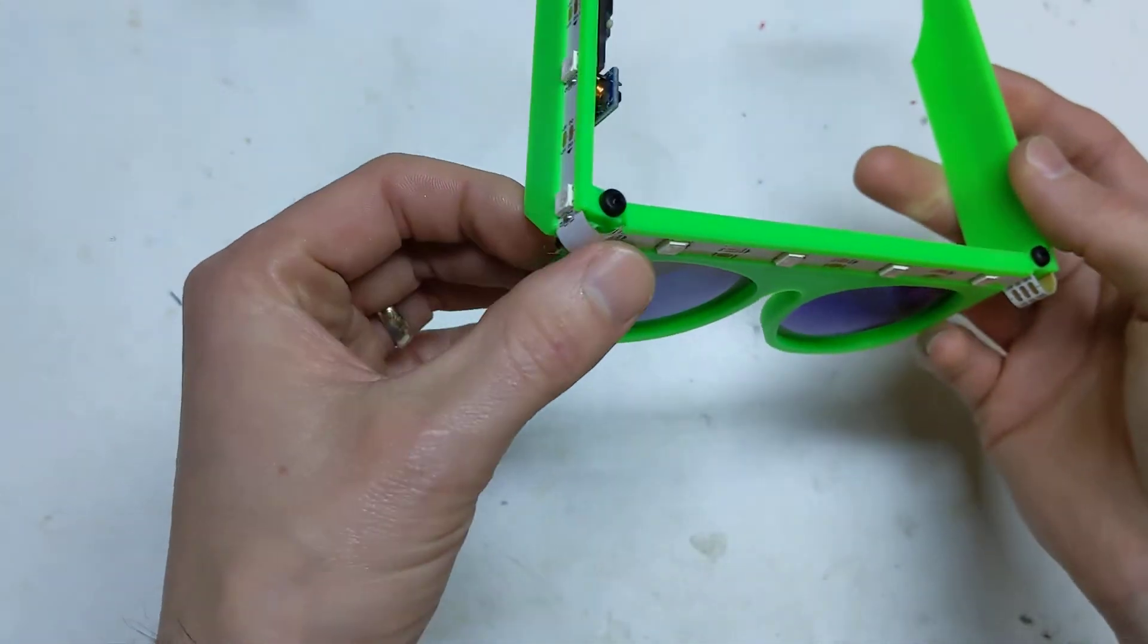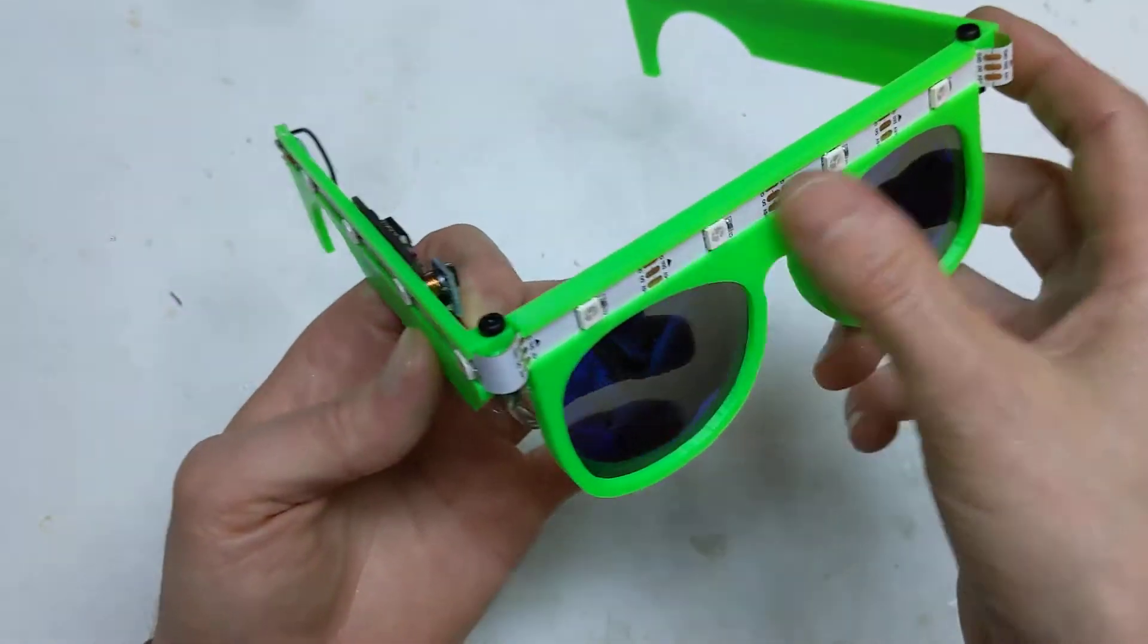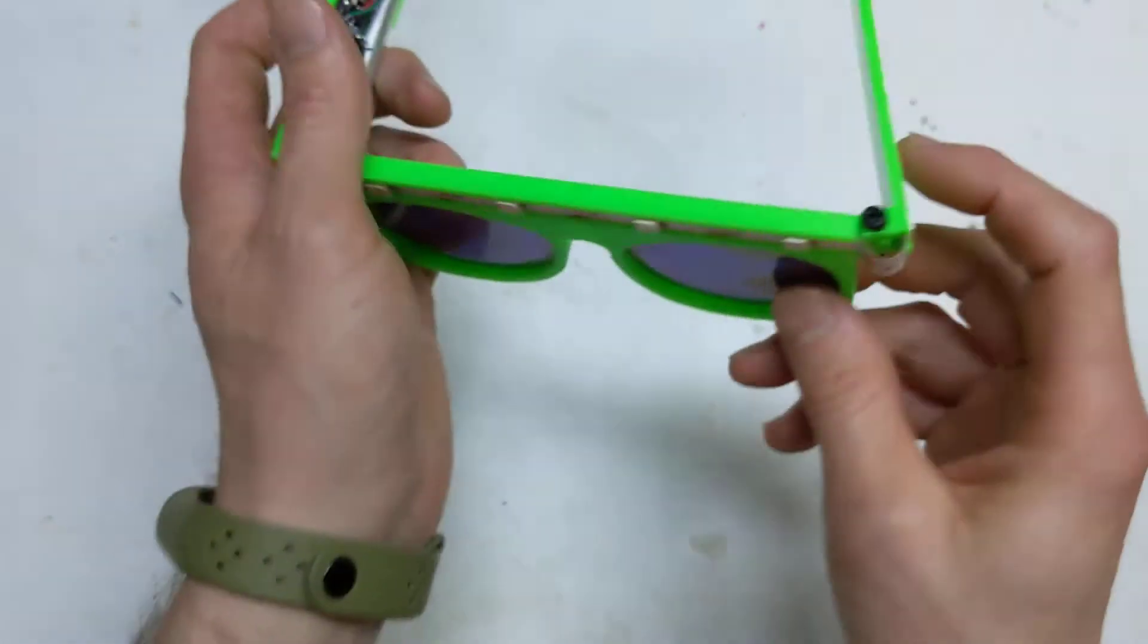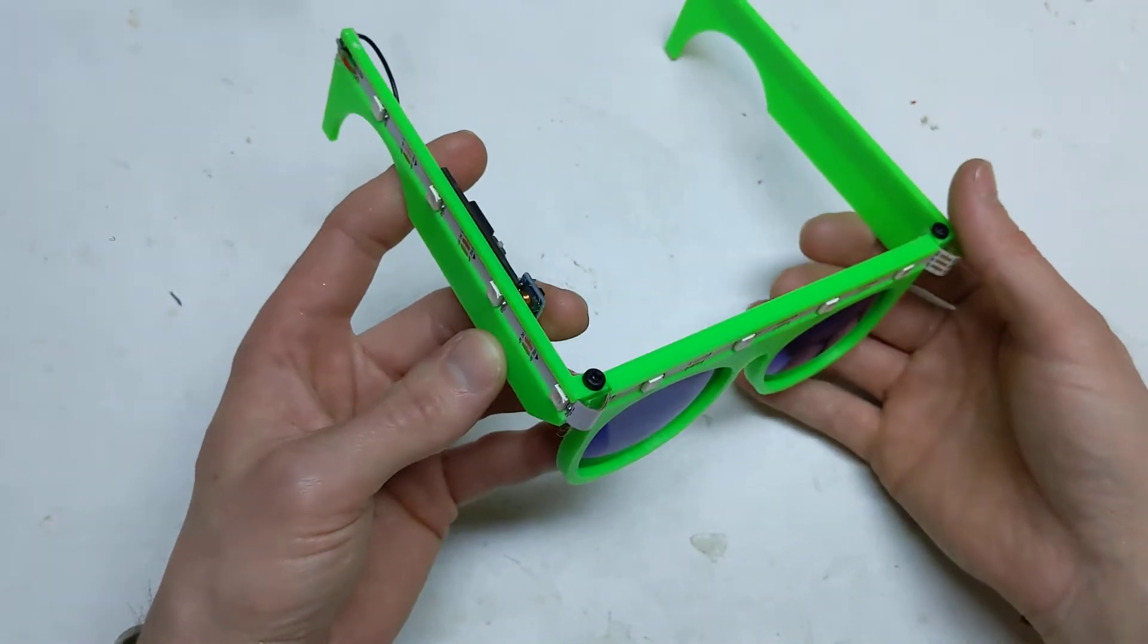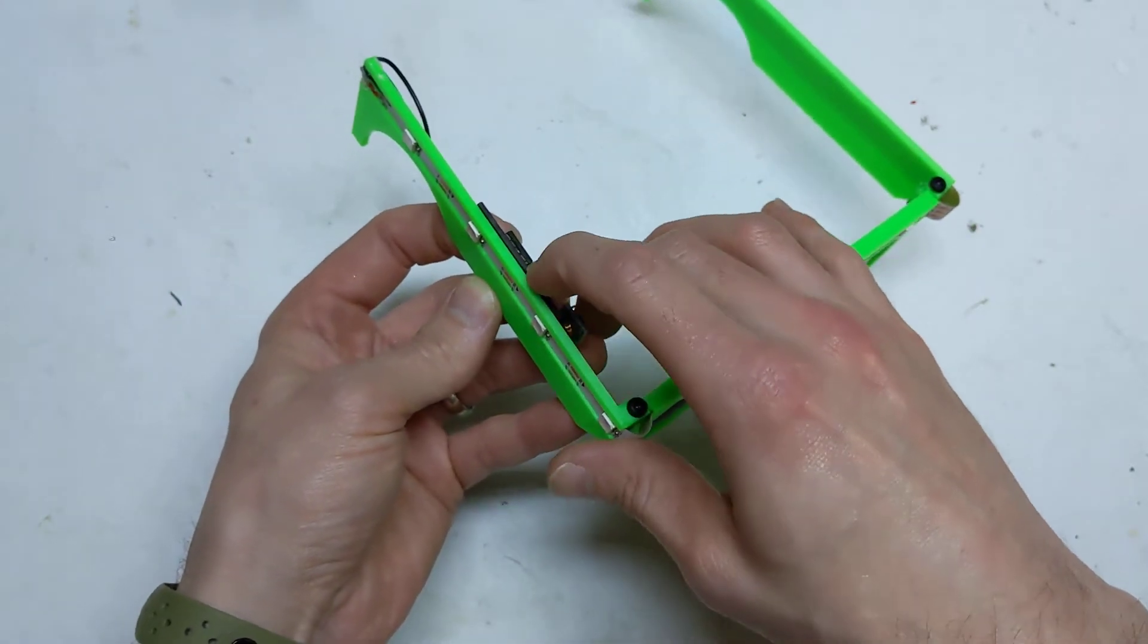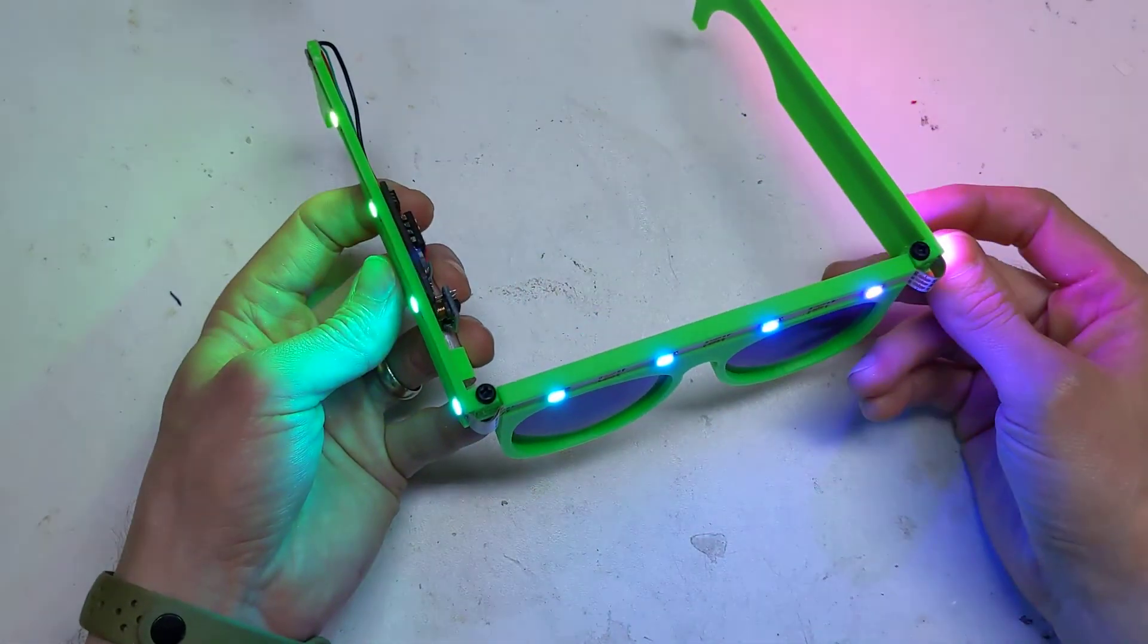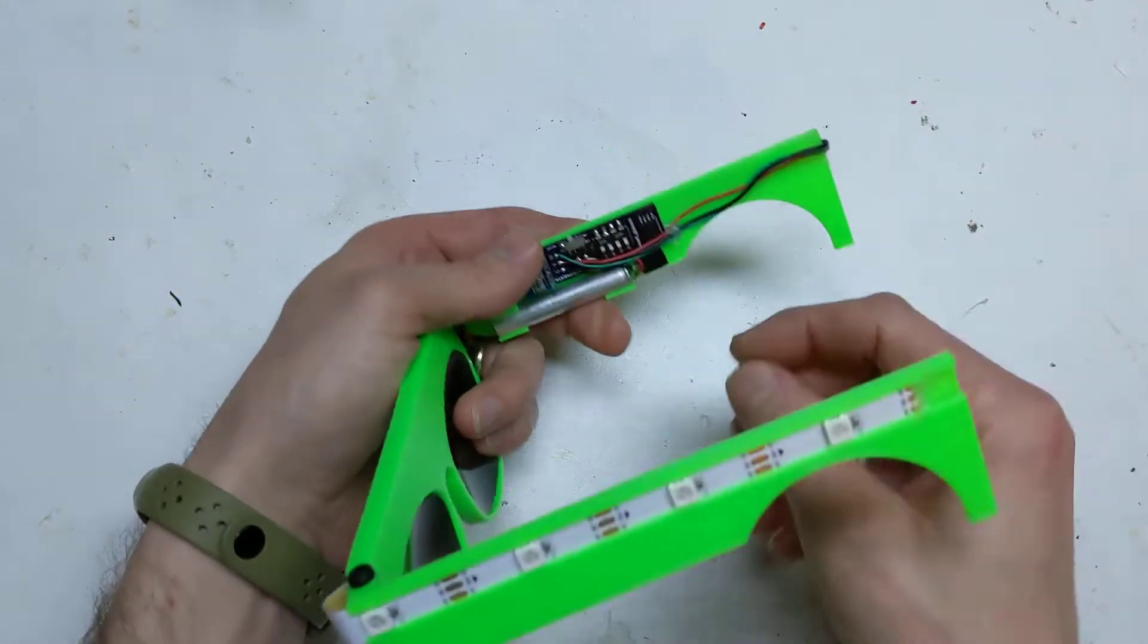They do bend because of the flexibility of the strip - they actually go around the corners. I've got four LEDs per side. Obviously if you had denser LED strips you could get more on there. It's got the same code as before with four different modes.